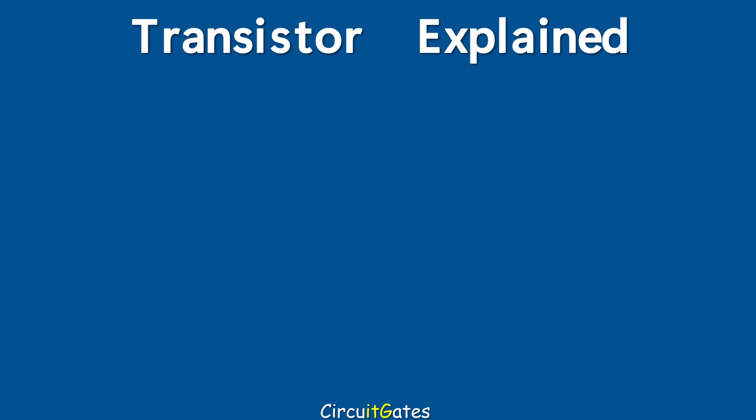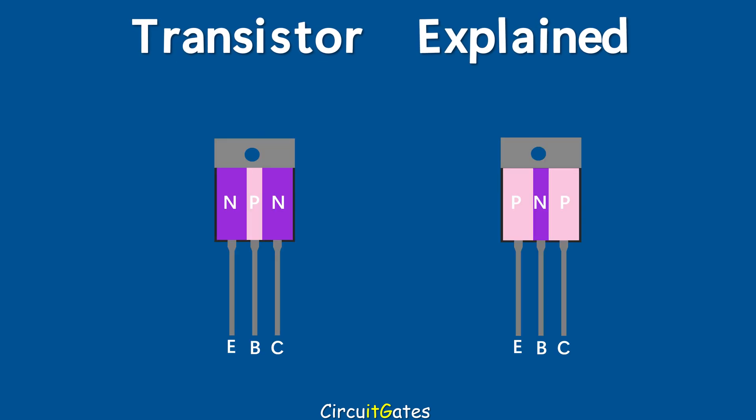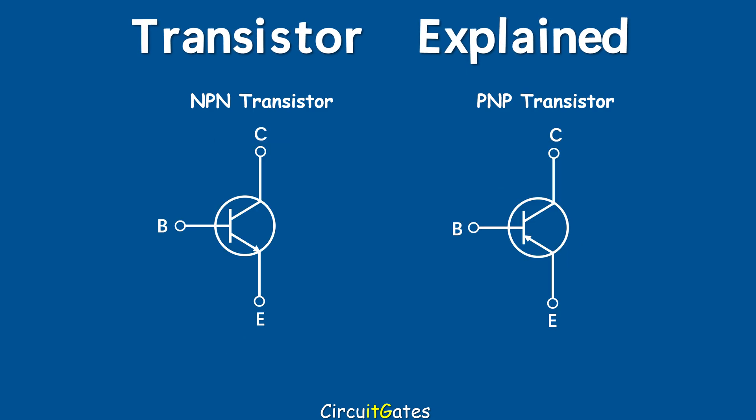A transistor consists of three regions separated by two PN junctions. We have two types of BJT transistors: one with two n-type materials separated by a p-type material, called the NPN transistor, and the other with two p-type materials separated by an n-type material, called the PNP transistor. The following are the symbols of PNP and NPN transistors. The arrow on the symbols shows the direction of conventional current, which flows from positive to negative.